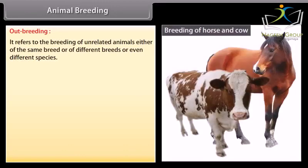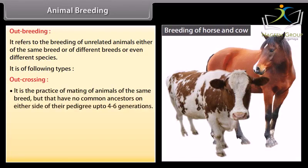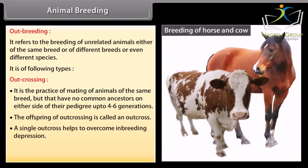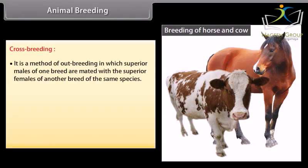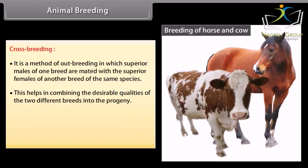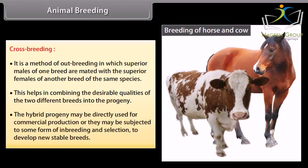Outbreeding refers to the breeding of unrelated animals, either of the same breed, different breeds, or even different species. Outcrossing is the practice of mating animals of the same breed that have no common ancestors on either side of their pedigree up to 4 to 6 generations. A single outcross helps to overcome inbreeding depression. Cross breeding is a method of outbreeding in which superior males of one breed are mated with superior females of another breed of the same species.